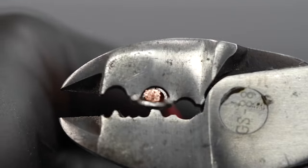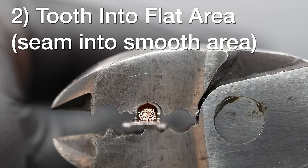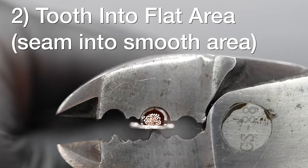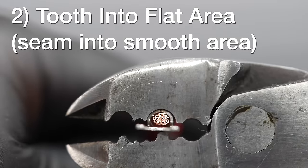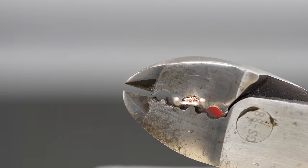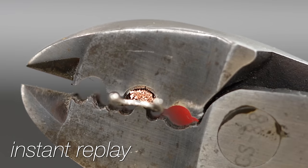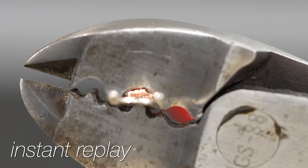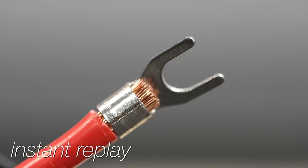But the show isn't over yet. Let's flip that terminal over in the exact same tool and see what kind of result we get. We've got the tooth biting into the flat portion of the connector. And look at the difference here, a perfect result.